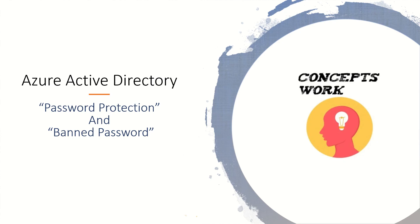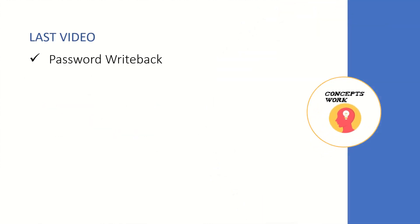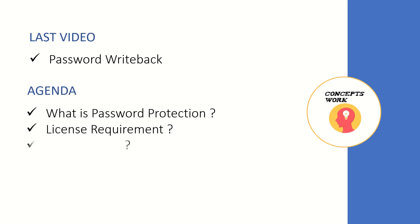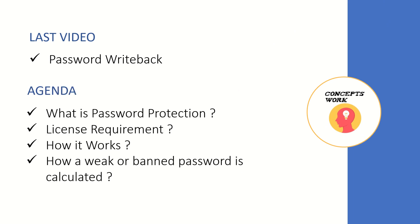Welcome back to our series on Azure Active Directory. In this video we're going to talk about password protection and bad passwords. In the last video we discussed password writeback and how to implement it for your on-premises environment. The agenda for this video covers what password protection is, how it works, the license requirement, and how a weak or banned password is calculated.